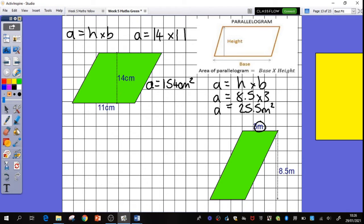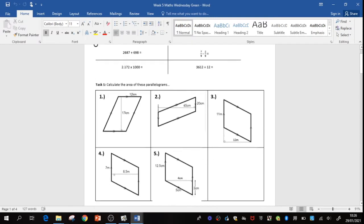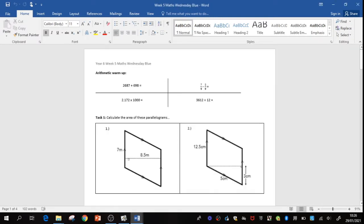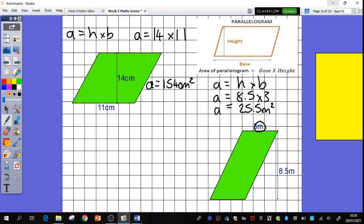What I'd like to do now is to pause the video. Have a go with your task 1. Green, you have 5 questions to do there. Blue, you only have the 2, just to prove to me that you can do this as it is. Very simple. And come back when you're ready for task 2.